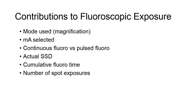We can summarize the factors that contribute to fluoroscopic exposure rates in the following six items: the mode used, meaning magnification mode — the smaller the diameter of the input phosphor, or the higher the magnification, the more x-ray intensity is required to maintain image brightness at the output; the mA selected; operations in continuous mA mode vs. pulsed mA mode; the actual source-to-skin distance used; the cumulative fluoro timer used; and the number of digital spot exposures taken, which require greater exposure than live fluoro.